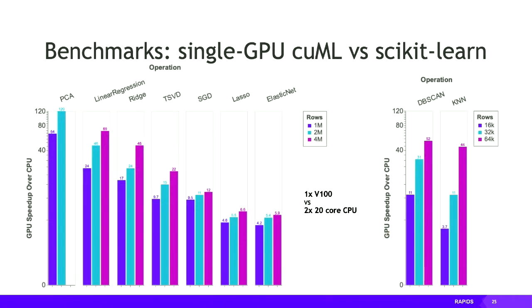The benchmarks for cuML show single-GPU speedups. It's still early days, so most things are single-GPU today, but we're rapidly adding multi-GPU acceleration. Depending on the algorithm, you can see speedups ranging from about 5x up to over 100x versus sklearn. For DBSCAN and KNN, the dataset sizes shown are smaller because running datasets of millions of elements on the CPU would take a very long time.